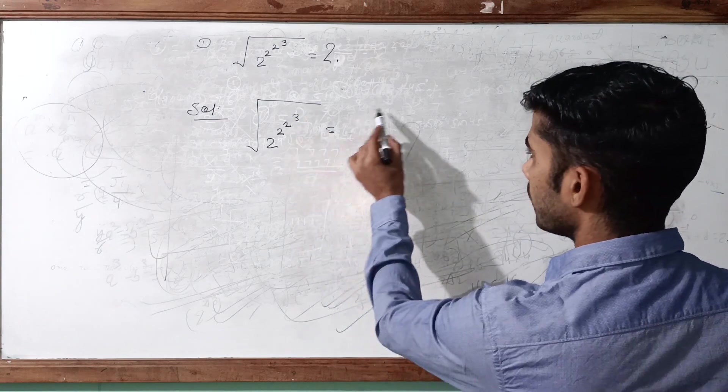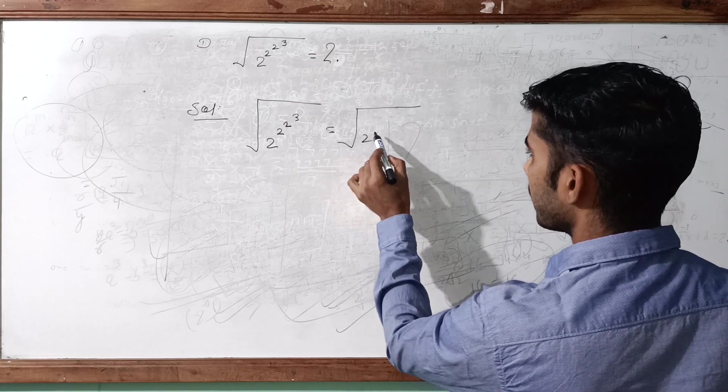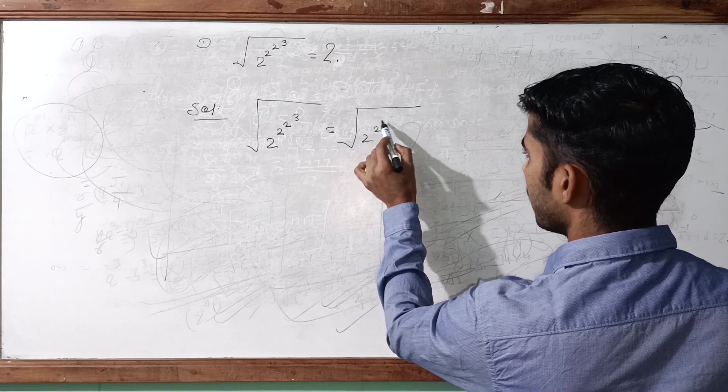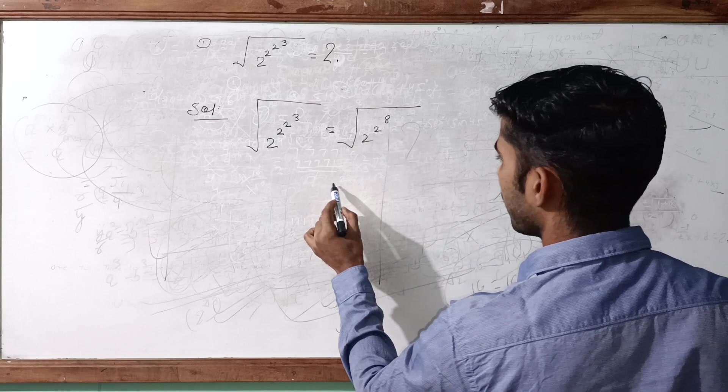So 2 raised to 3 can be written here as 2 square then raised to 8.